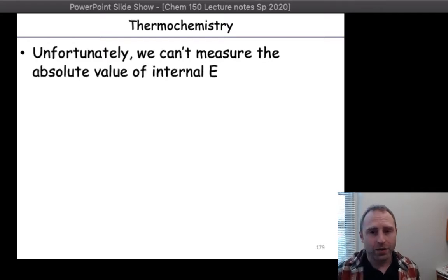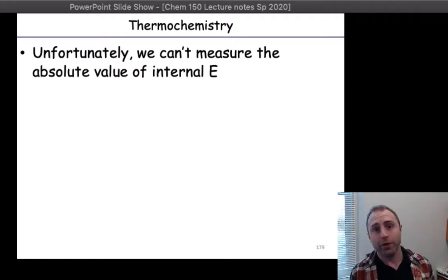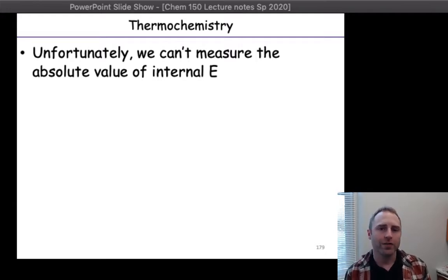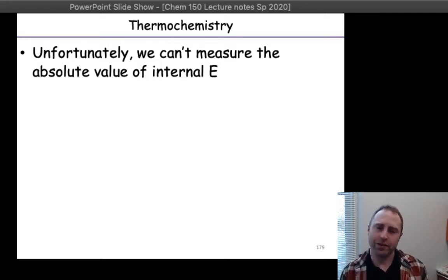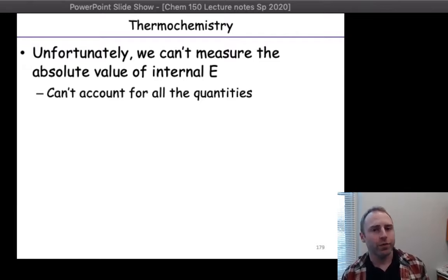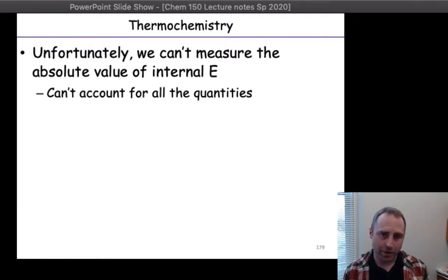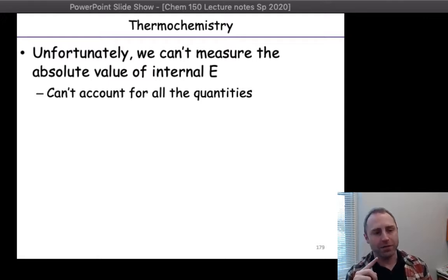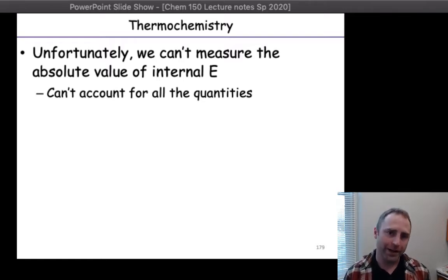Going back to the concept of internal energy — I'll be using U most of the time, though your book uses E. For the internal energy of your system, you're not going to be able to stick any kind of probe into a thing and say that is the internal energy of our system. It doesn't work like that, largely because we can't accurately account for all the different kinds of energy within a system. From last time, we had different kinds of molecular motion, different electrostatic interactions, and the kinds of interactions that hold protons and neutrons together. You're not going to get all that from one probe.